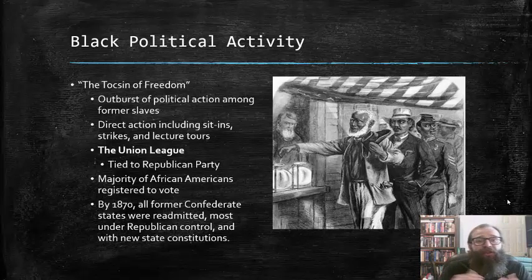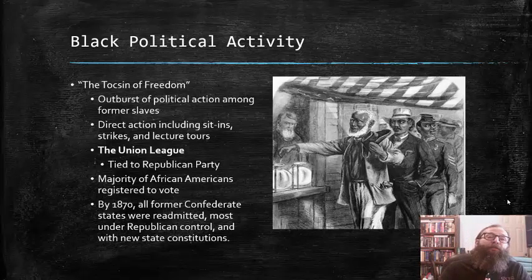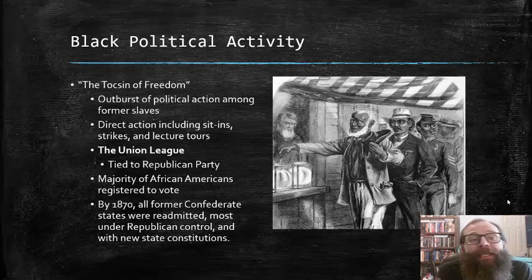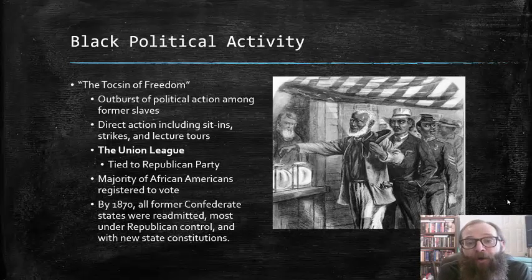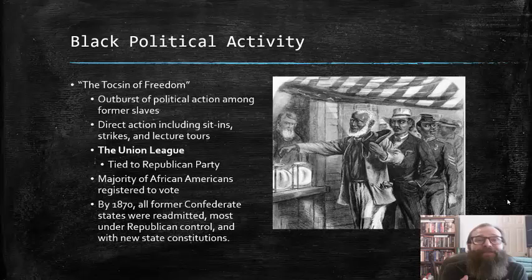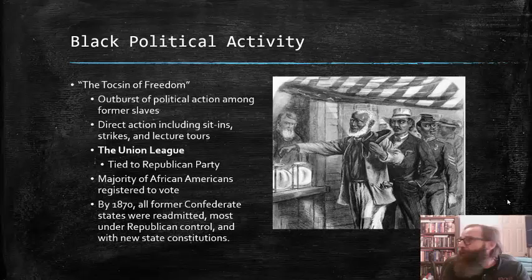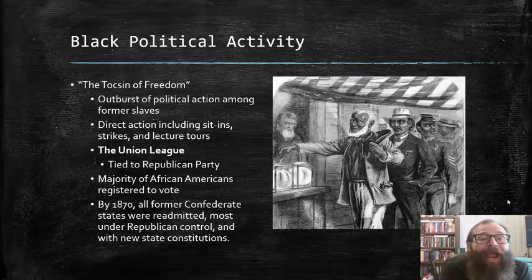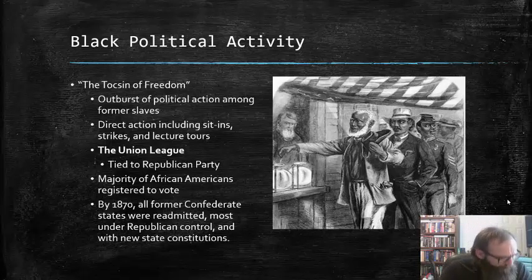These actions included such things as sit-ins, strikes, and lecture tours by African American political activists. There was the formation of the Union League in the South, which was very closely tied to the Republican Party and sought to galvanize this black political activity, particularly around voting and registration to vote. Within a very short period, the majority of African Americans in the South did register to vote.